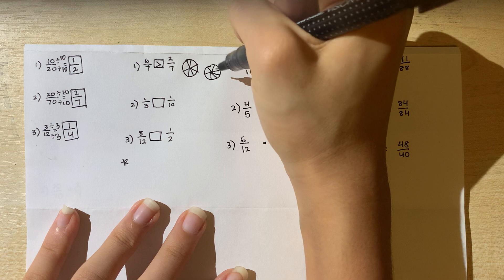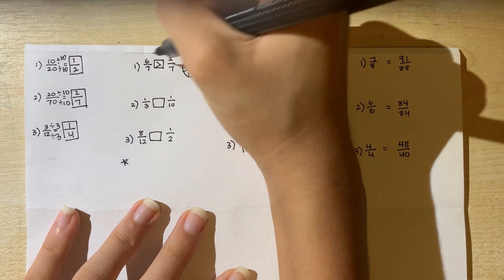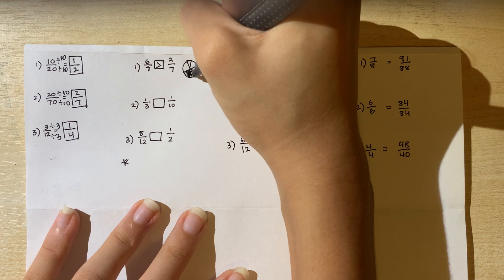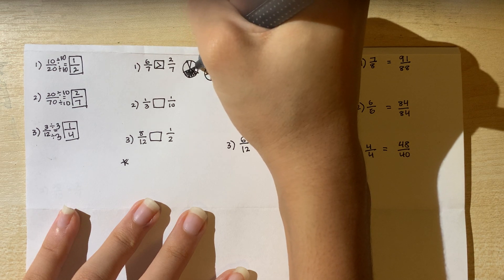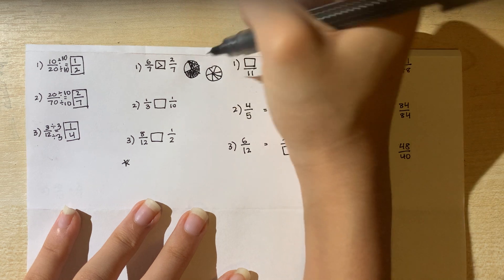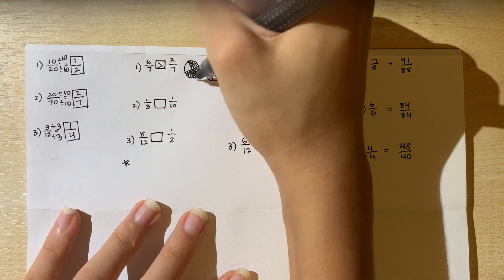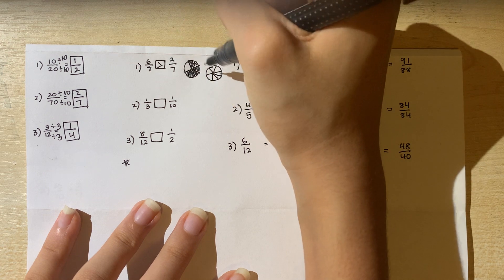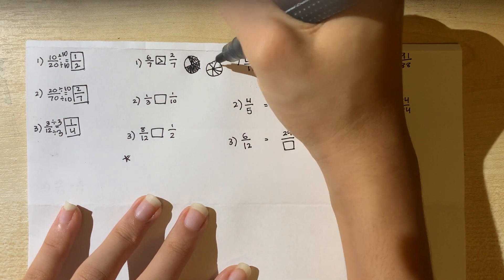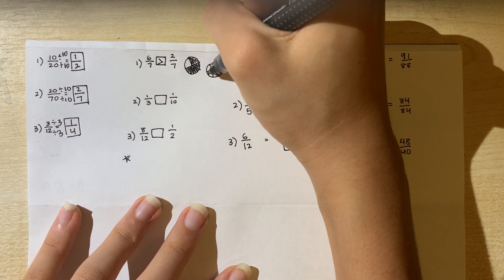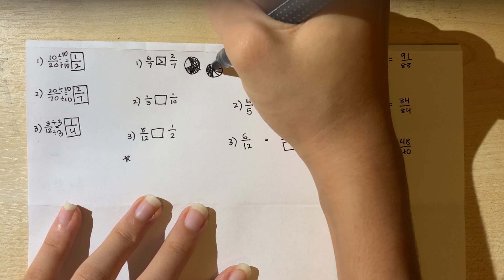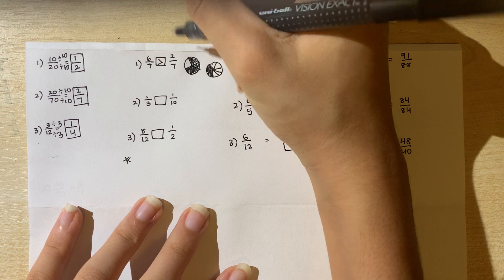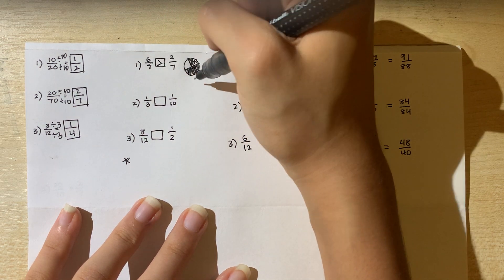If we split both circles into 7 slices, 6 over 7 means we shade in 6 of the 7 pizza slices, which shades almost all of the circle. For 2 over 7, we only shade 2 of those slices, which is a lot less. This proves that 6 sevenths is greater than 2 sevenths.